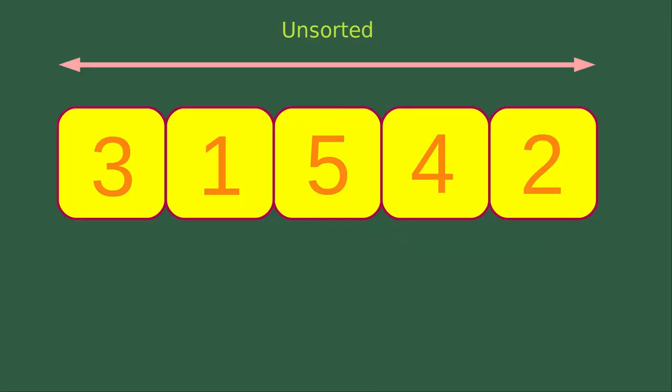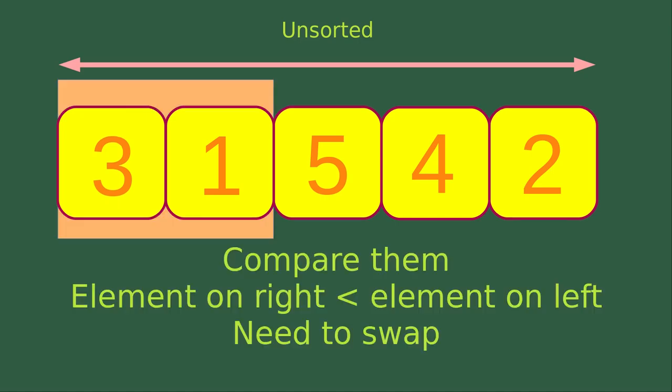Let us see an example. Suppose I have these five numbers, all of which are unsorted. Now I have a moving window, and I would start with the first two elements. I would like to compare them and see if the element on the right-hand side is smaller than the element on the left-hand side. I need to swap the elements containing three and one.